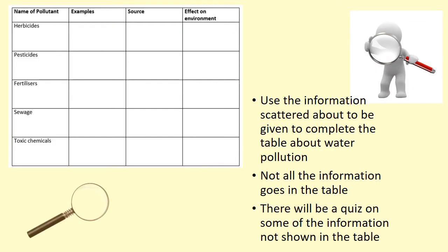What I'd like you to do today is either print out or draw out a copy of this table. As we go through the next slide, I want you to fill in that information. We've got some pollutants listed: herbicides, pesticides, fertilisers, sewage, and toxic chemicals. I want you to write down some examples of the pollution caused by them, what the source is, and the effect on the environment. We'll also have a little quiz about some bonus information at the end.